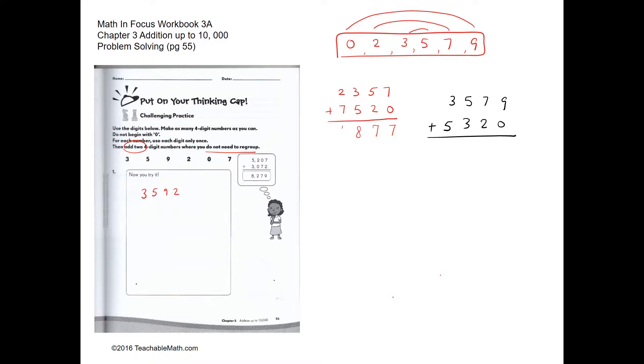Similarly, for this example over here: 9 ones and 0 ones, 7 tens and 2 tens, 500 and 300, 3000 and 5000.